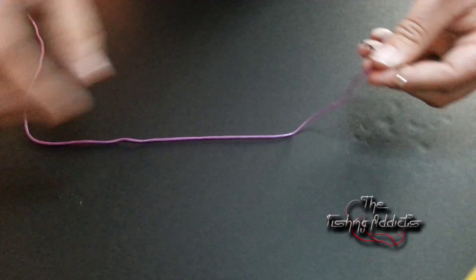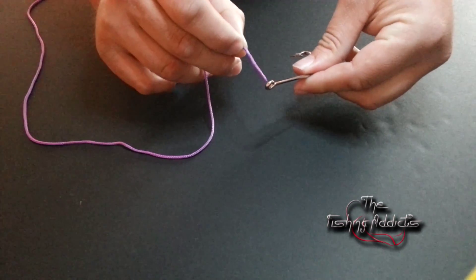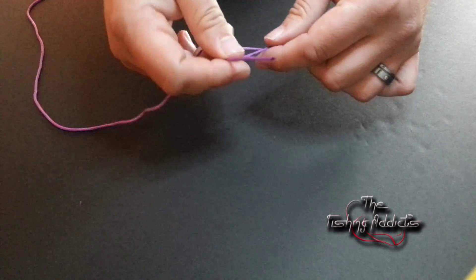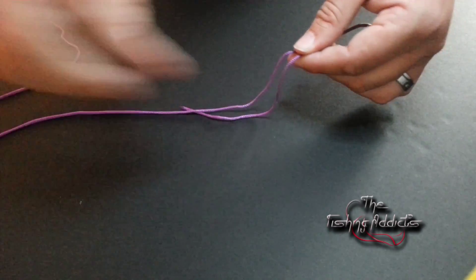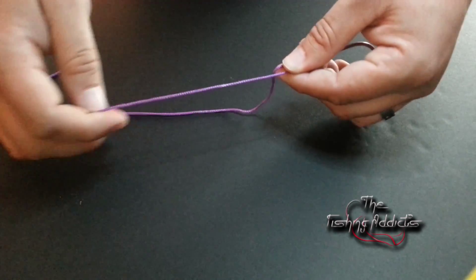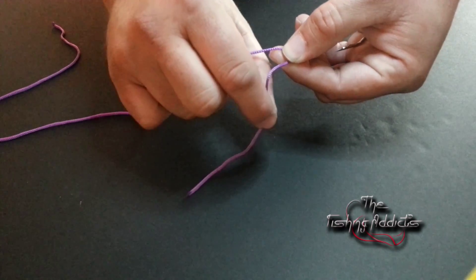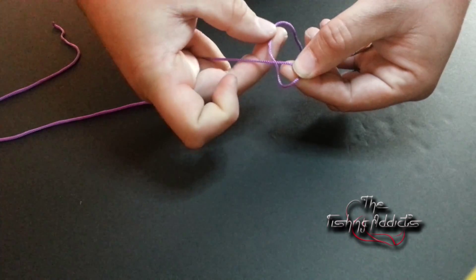You're going to go up through the eye of your hook, pull yourself through a bit so you've got something to work with. You're going to pass your tag end under.